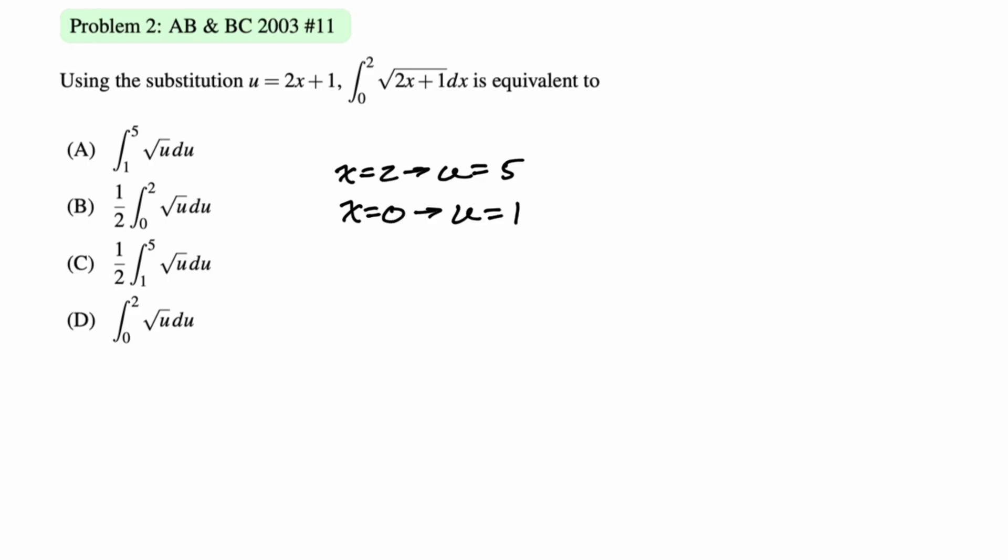Now, if u is equal to 2x plus 1, then du is equal to 2 dx, or more importantly for us, 1 half du is equal to dx. Now all we have to do is make our substitution. We're going to replace our bounds, we're going to put in u, and then dx is 1 half du. We can rewrite this, and then we can see that the answer we would choose is c. Let's look at another one.